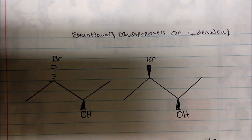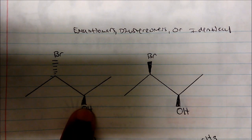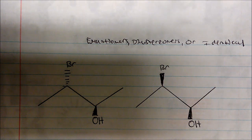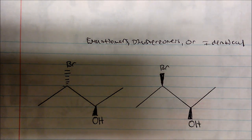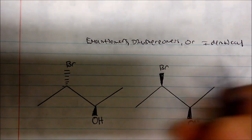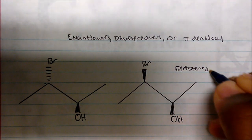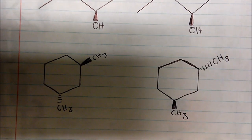If I look on either end, my hydroxy group stays the same — they're both coming out at me. However, my bromine group switches. That's the definition of diastereomers. You need to know that, because if you don't know the definition then you don't actually know what the compounds are. So these are classical diastereomers.